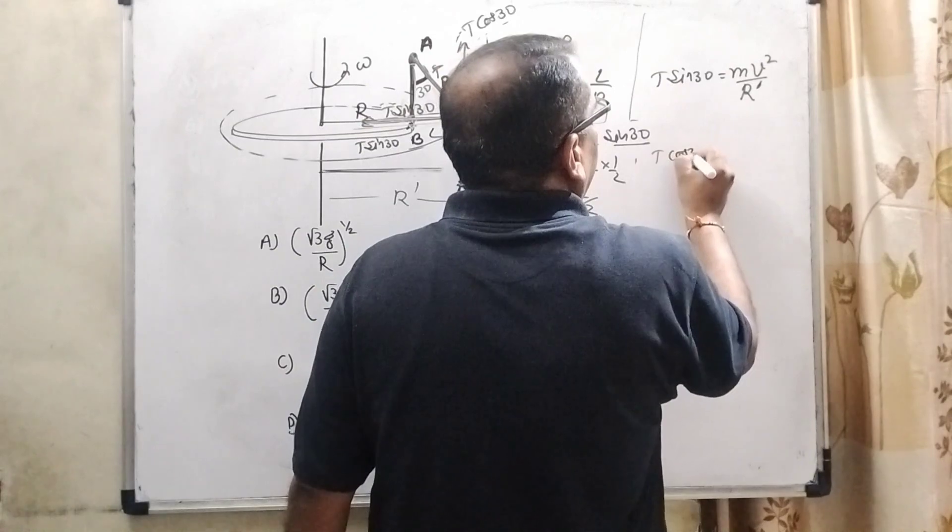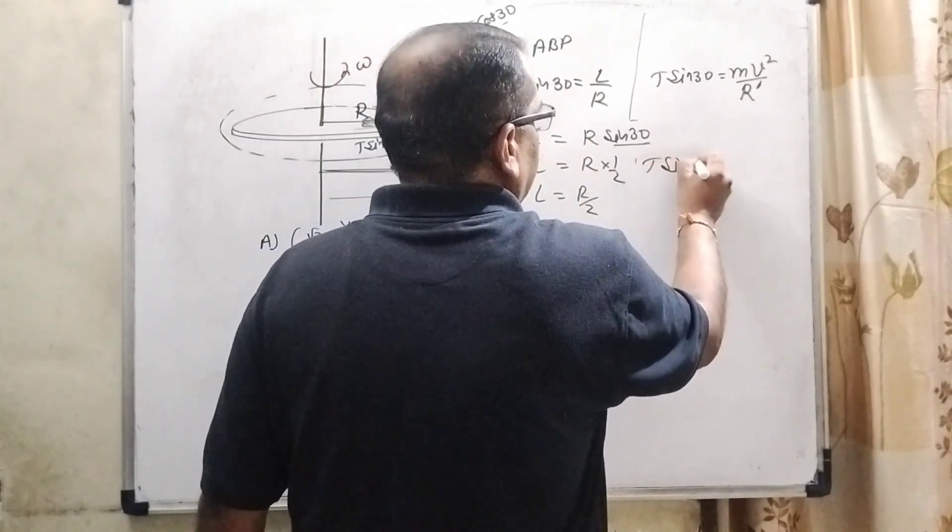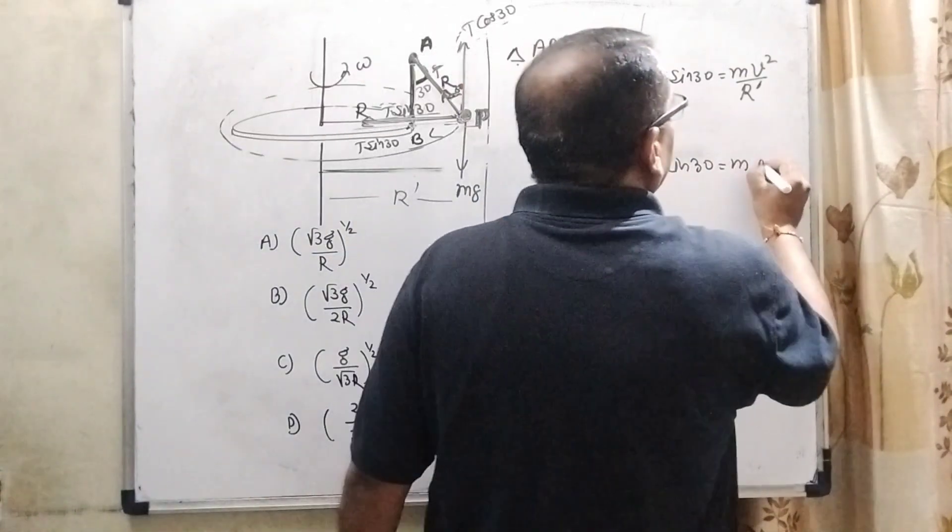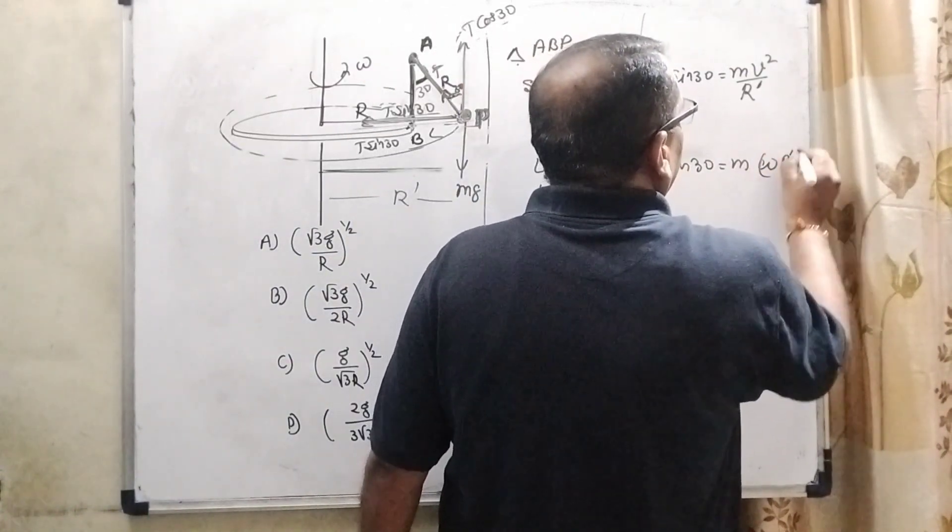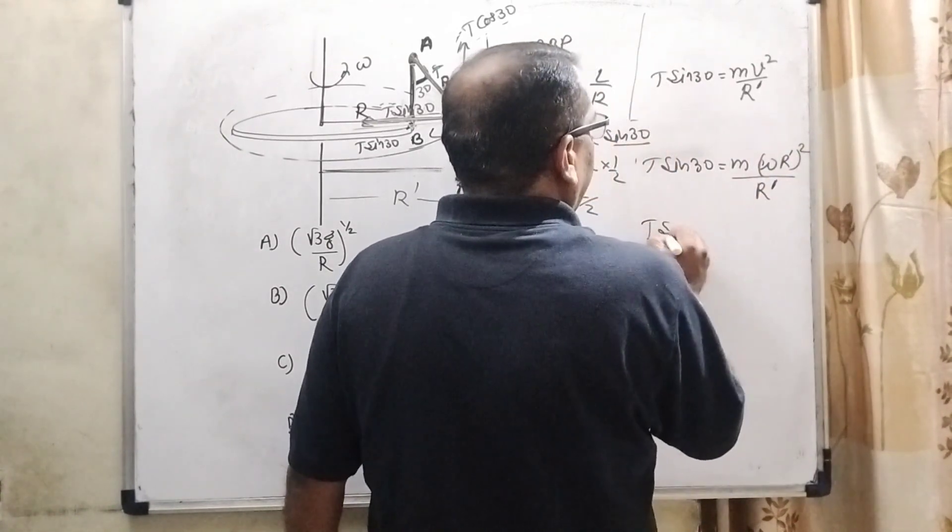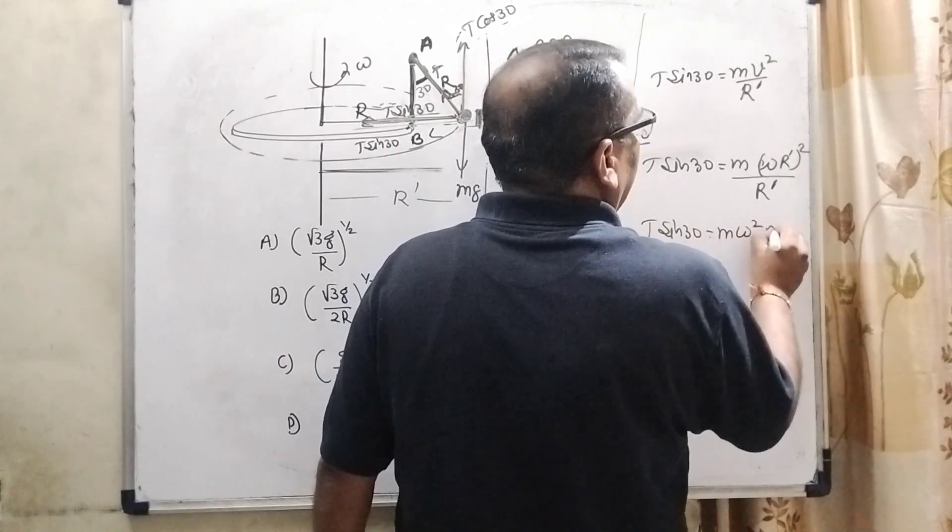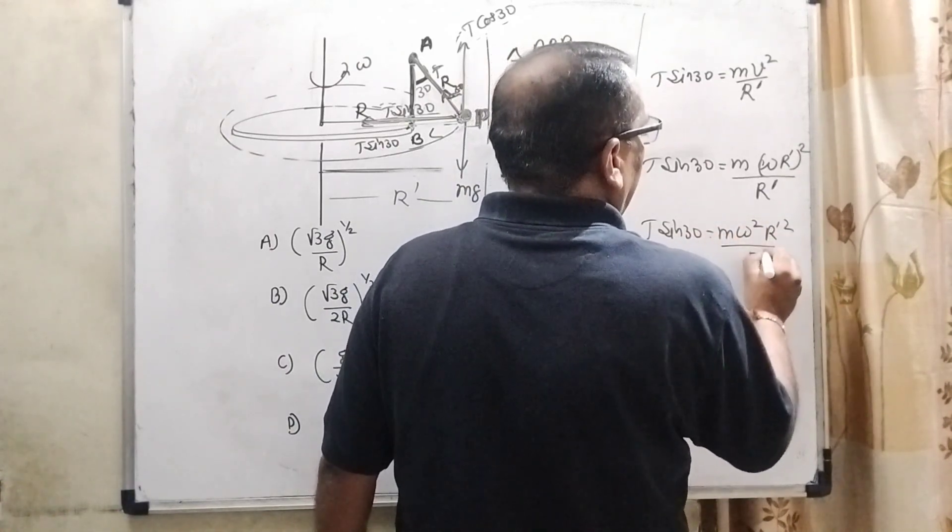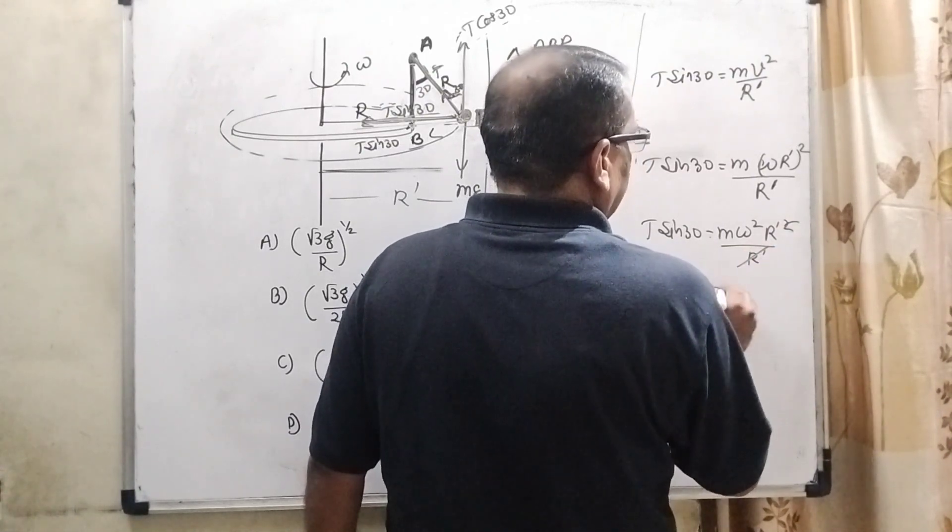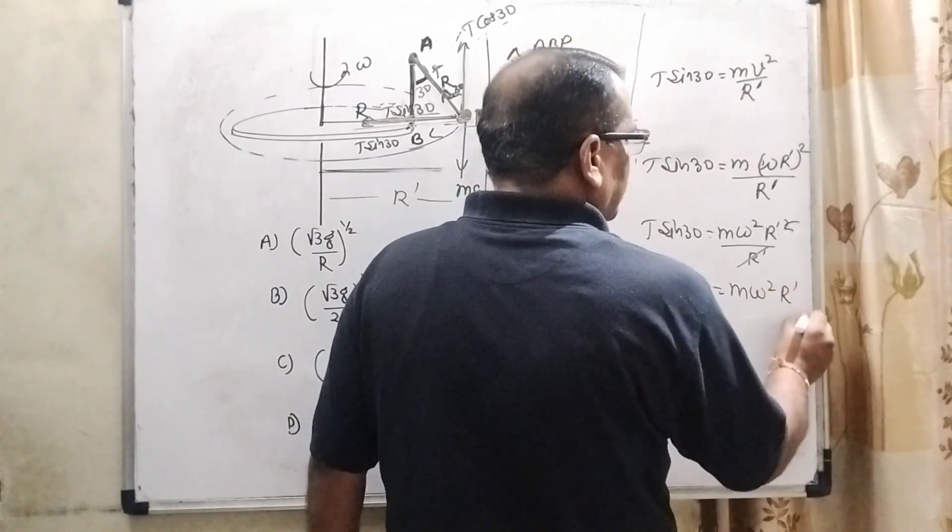So, here T sin 30, M V can be written as omega R dash. So, it can be written as T sin 30 M omega square R dash square upon R dash. So, it is first equation.